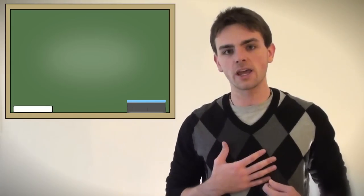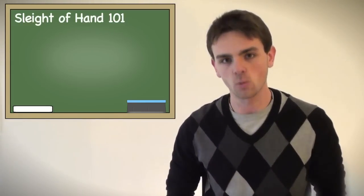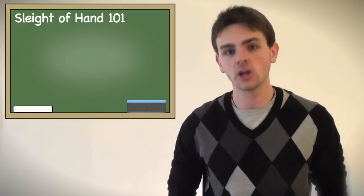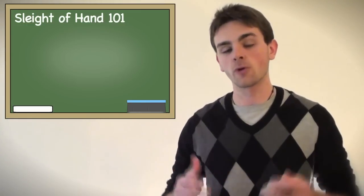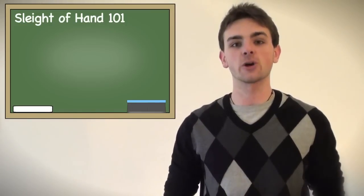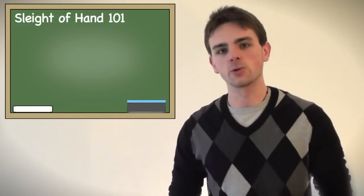What's going on people of the world? My name is Jay and welcome to Sleight of Hand 101. Today we will be learning the five essentials to becoming a card magician. Before we begin, I ask that you get a writing utensil and something to write on because we will be taking notes. So let's just jump right into it.